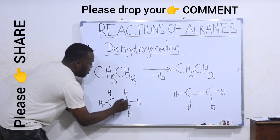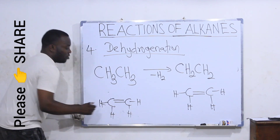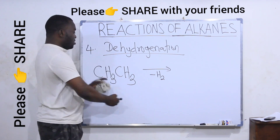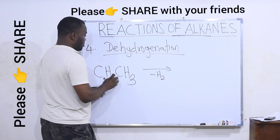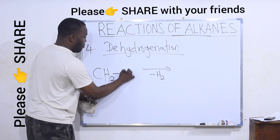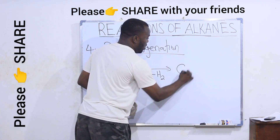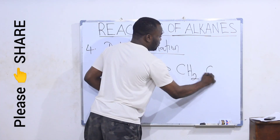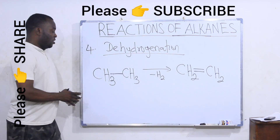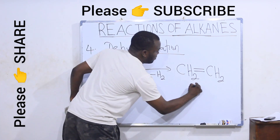This is an alkane. If I remove this H and remove this H, I will have a double bond here. We can rewrite it: in this alkane, it is CH3 single bond CH3. By the time you remove one H from here and one H from here, you will have CH2=CH2 — a double bond between the carbons. This is ethane while this is ethene.